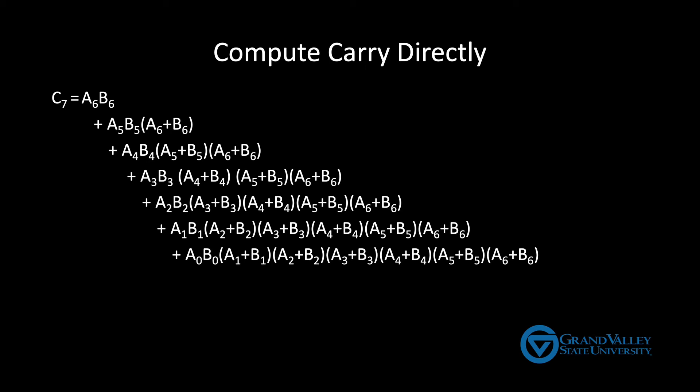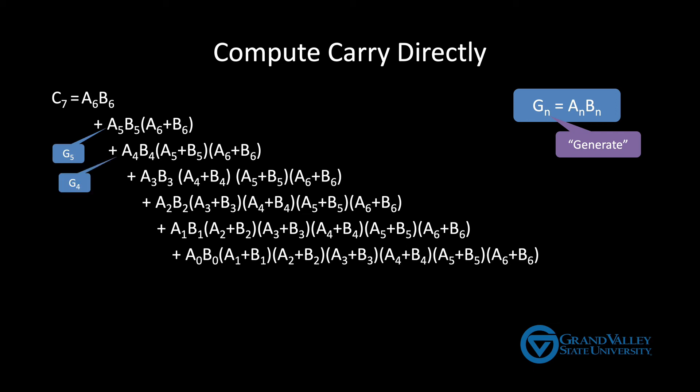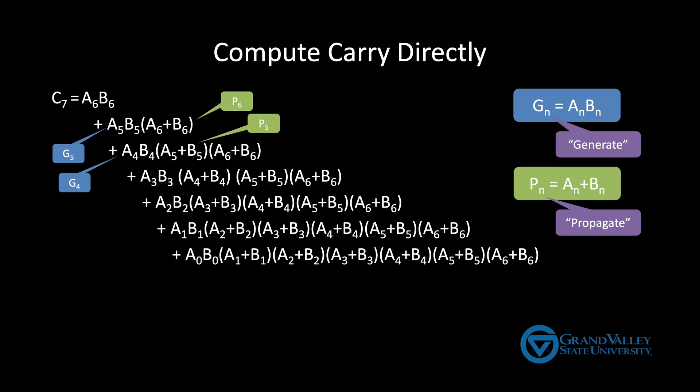First we'll define G sub n to be A_n and B_n. G in this case stands for generate. And we make this substitution because when both A_n and B_n are true, it means that column generates a carry. Defining G in this way allows us to clean up the formula a little bit because we can replace A5 B5 with G5 and we can replace A4 B4 with G4 and so on. Similarly, we'll define P sub n to be A sub n or B sub n. In this case, P stands for propagate. When either A_n or B_n is true, it means that column is propagating a carry. So we can further clean up this formula by replacing, for example, A6 B6 with P6 and replace A5 B5 with P5 and so on. When we make all of these substitutions, our formula is still long, but it's much more manageable.